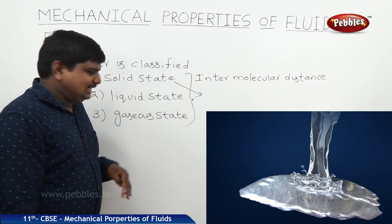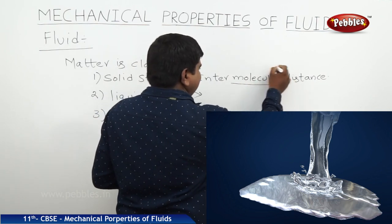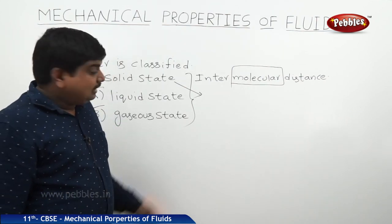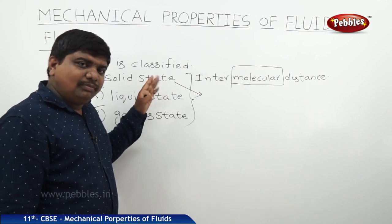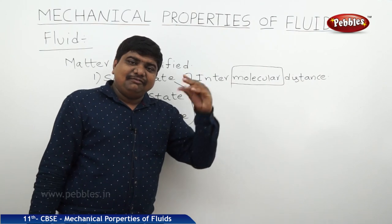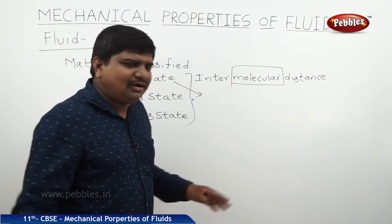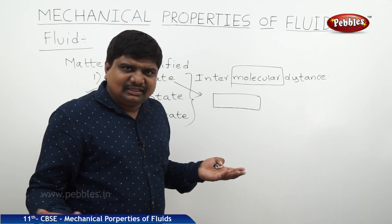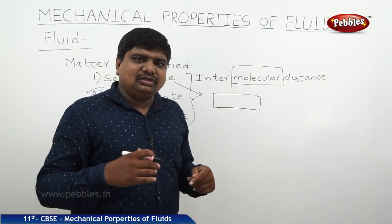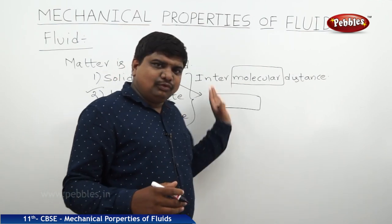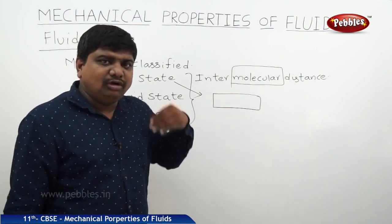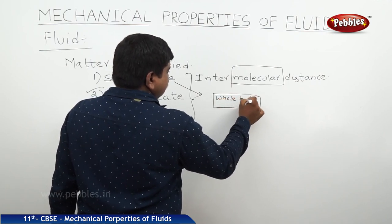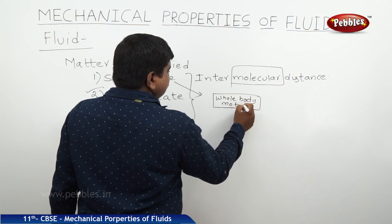In solid state, molecules are tightly fixed and it is very difficult for them to move. In solid state, the whole body will move, but the molecules won't move because they are fixed in a system. Take a brick — that brick is a combination of many molecules. If you throw the brick, the whole body moves from one point to another. It is not the molecules that are moving; the whole body is moving. So solid state means whole body motion.